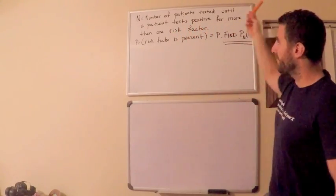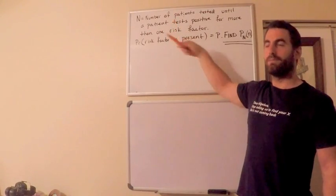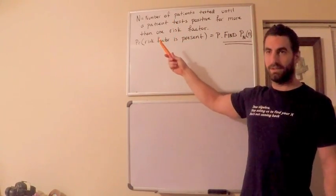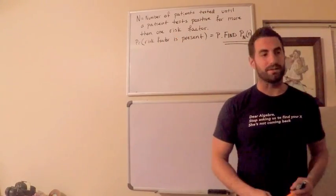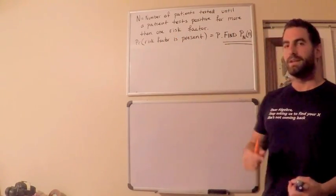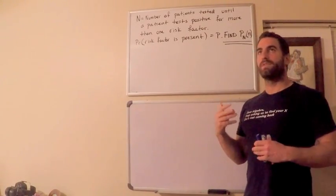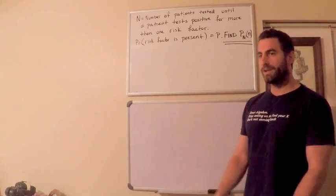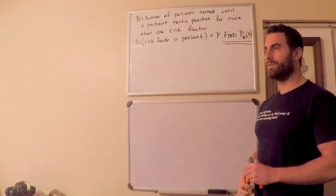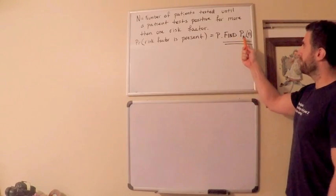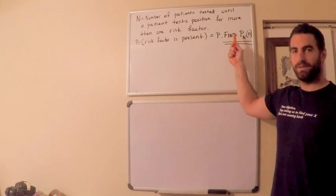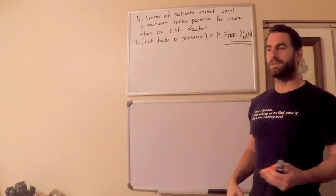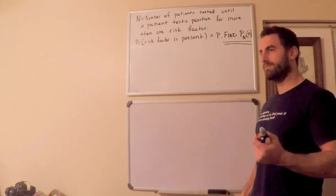The reason is because I'm interested in the number of trials — the number of people I need to test — until I have a success, where a success is at least one risk factor. There are a couple of different ways to define a geometric random variable, but defining it to be the number of trials until the first success is one of those ways. Although when we come up with the probability mass function P sub N of n, you'll see that this is not quite as straightforward as other geometric distribution functions may look.